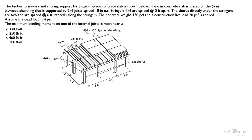The 6 inch concrete slab is placed on 3/4 inch plywood sheeting that is supported by 2x4 joists spaced 18 inches on center, and there are stringers 4x6 that are spaced at 5 feet apart.